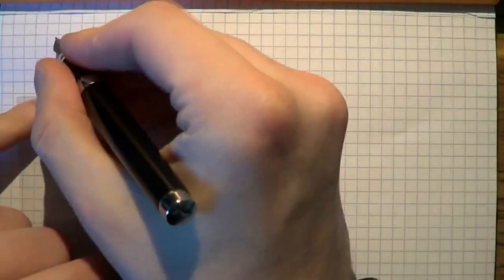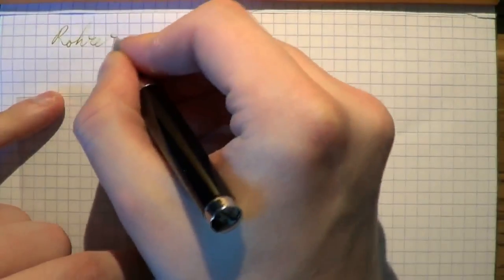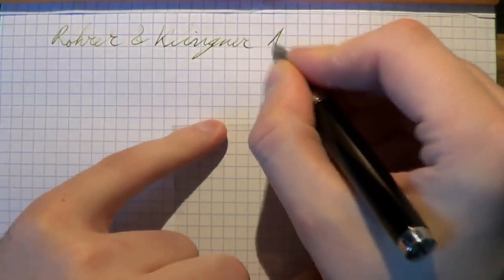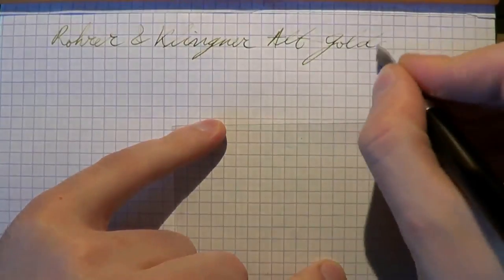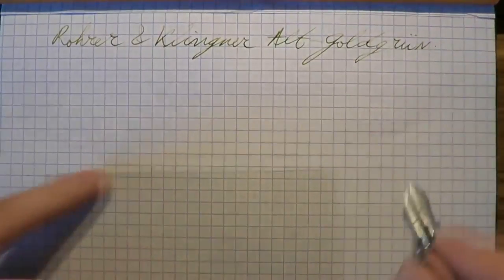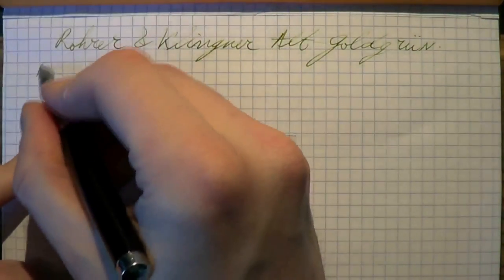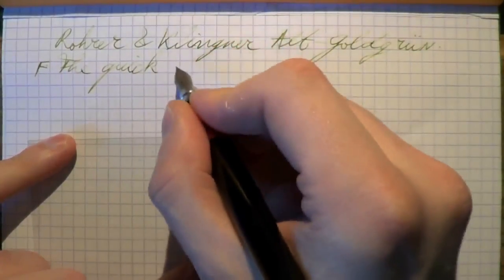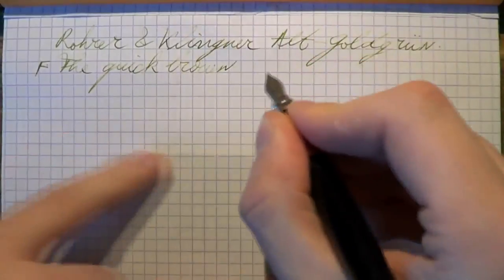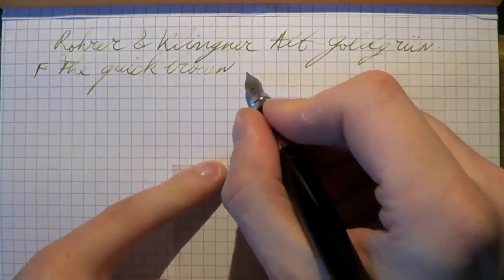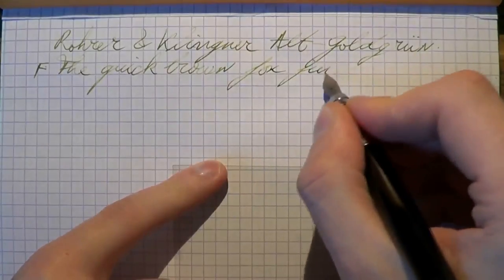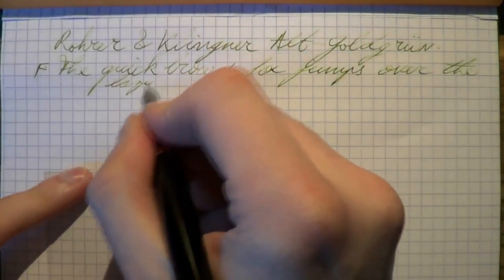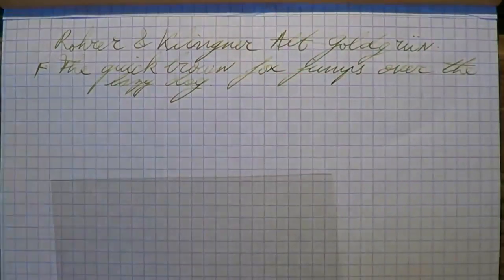Okay, so here we go with Rohrer und Klinger Alt Gold Grün, a much-requested inkcyclopedia ink. I know a lot of people love this and I never got around to buying a bottle, so it's nice that I have a sample of it now.